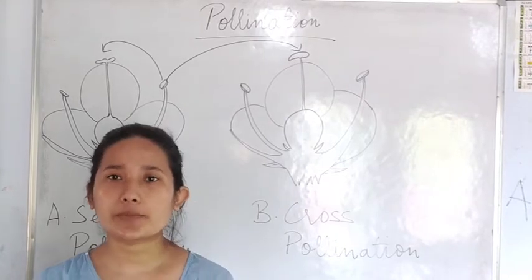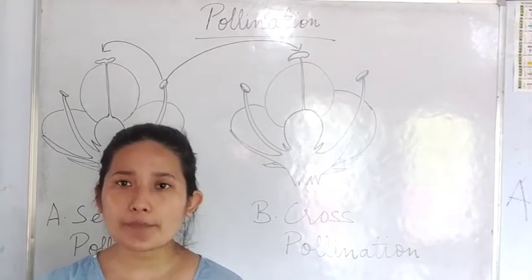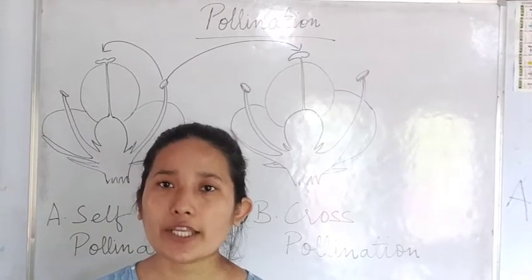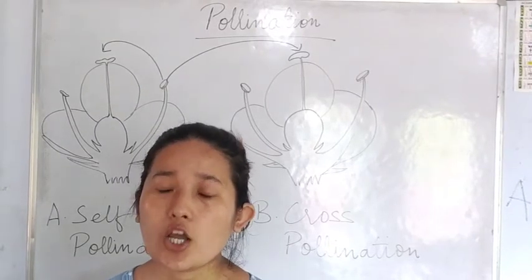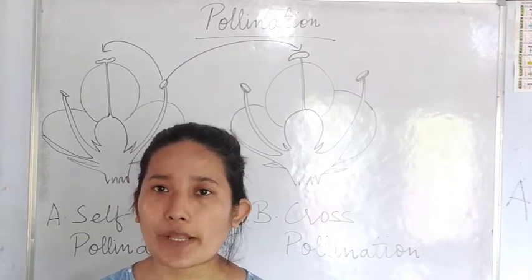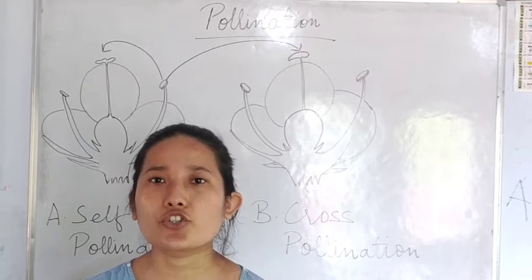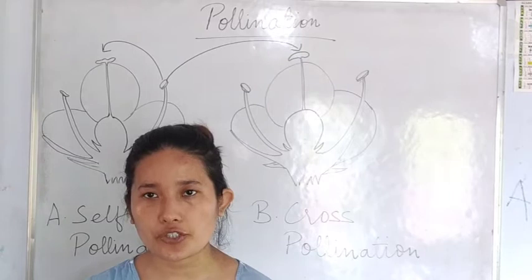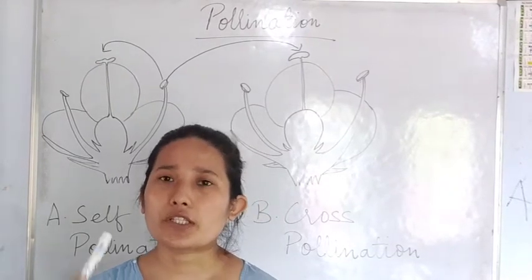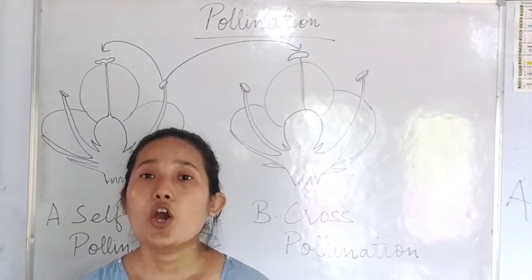This pollen has to be transferred to the stigma, which is the female reproductive part. The process of transfer of pollen from the anther to the stigma is known as pollination. Pollination is important because only after pollination will the male gamete fuse with the female gamete. Only after pollination takes place will fertilization occur, and after fertilization only the new plant is going to be formed. So it is a very important step for reproduction in plants.